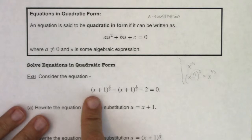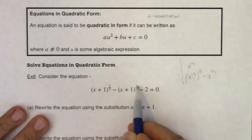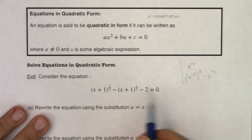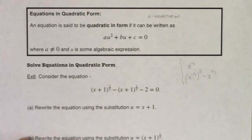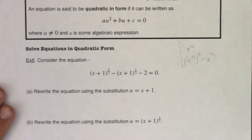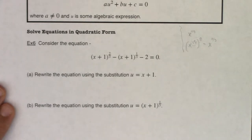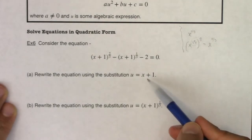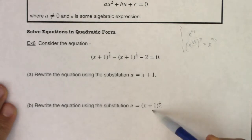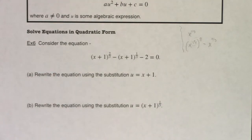We're going to consider this equation: x plus one to the two-thirds, minus x plus one to the one-third, and then minus two. We're going to try a couple of u substitutions and rewrite this equation with two different u substitutions playing out in parts a and b. The first u substitution we're going to try is u equals x plus one, and then u equals x plus one to the one-third. For examples six and seven, I will give you the u substitution.